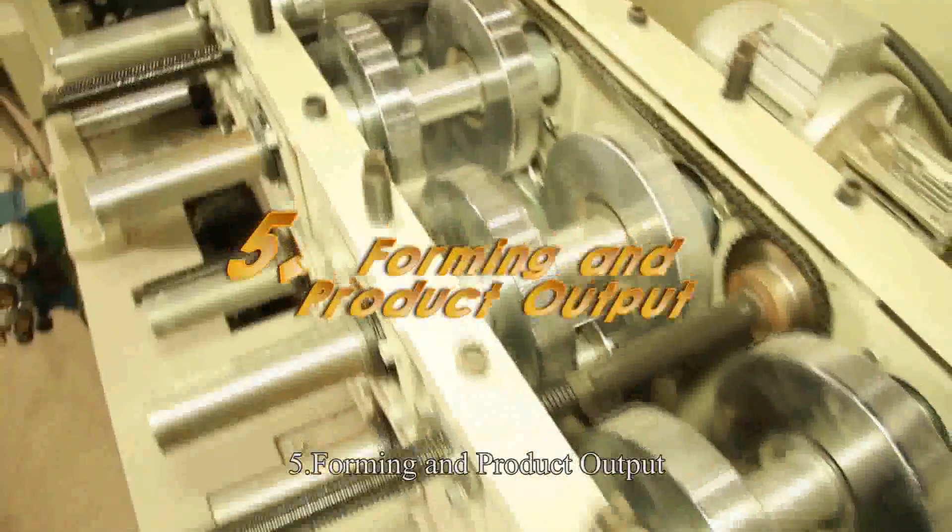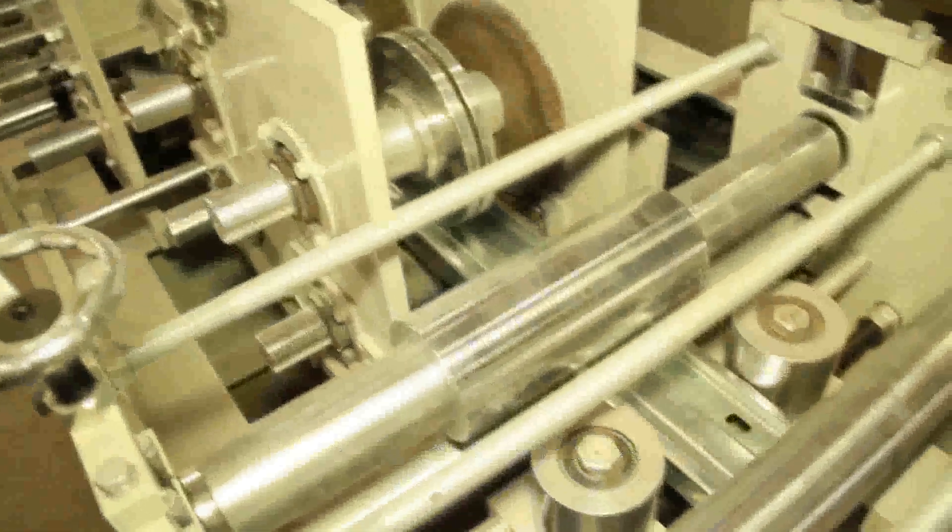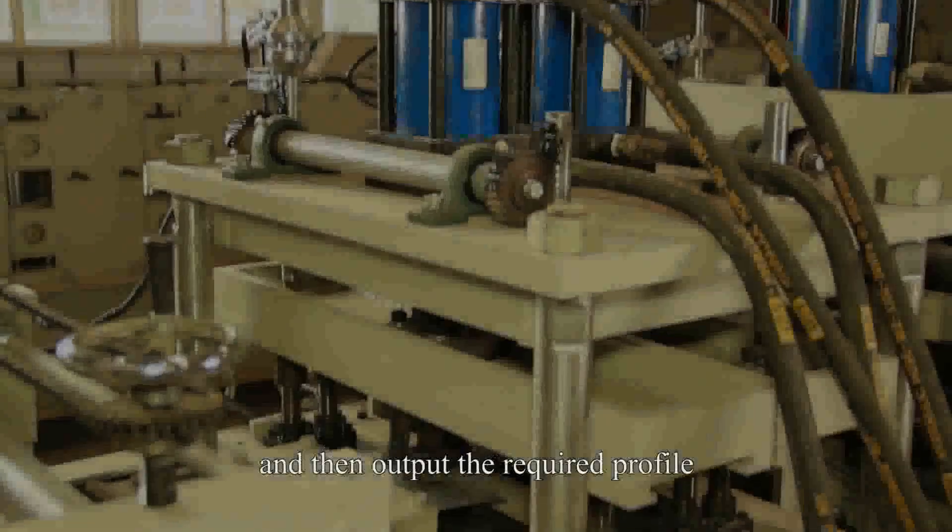Number 5: Forming and Product Output. The cut material will proceed to be roll formed by the devices of lip, height and reinforcing rib. And then output the required profile.